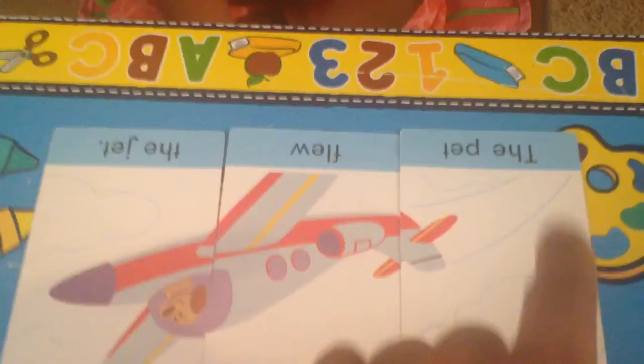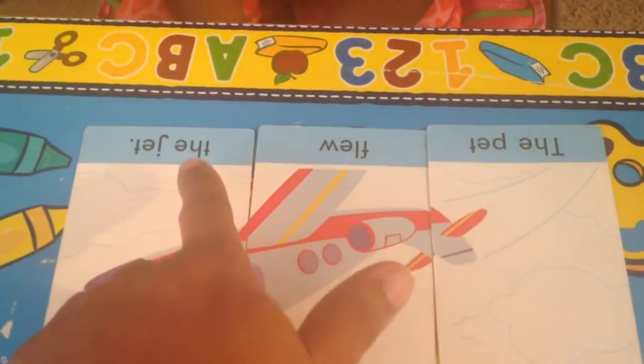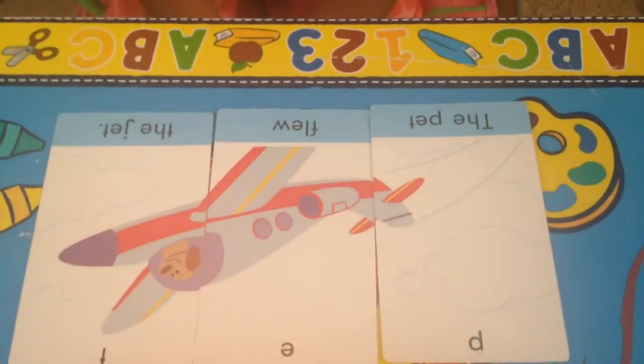Okay, and let's read the sentence. The pet flew in the jet. That's right, the pet flew in the jet. Good job.